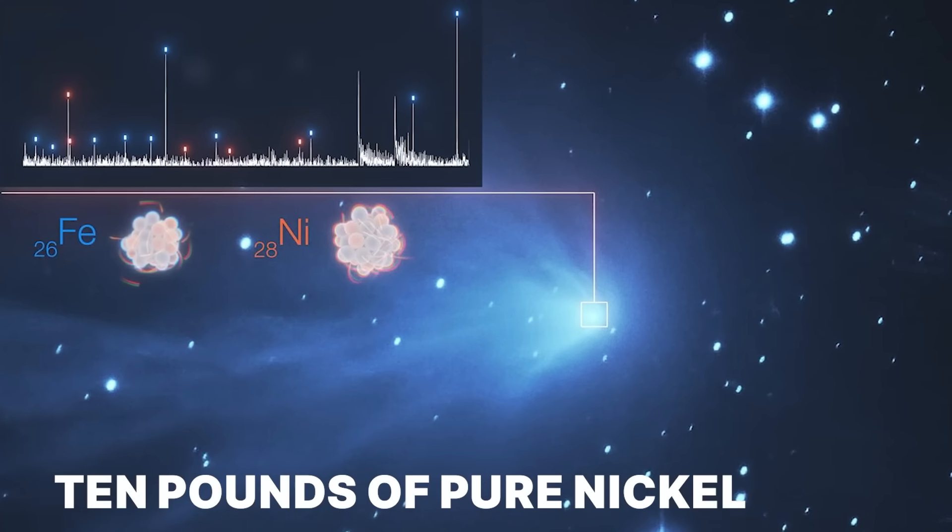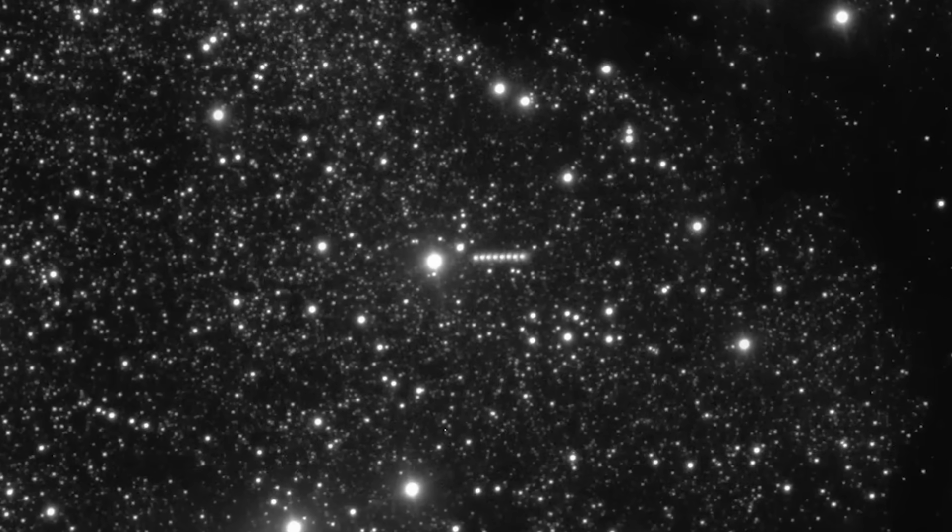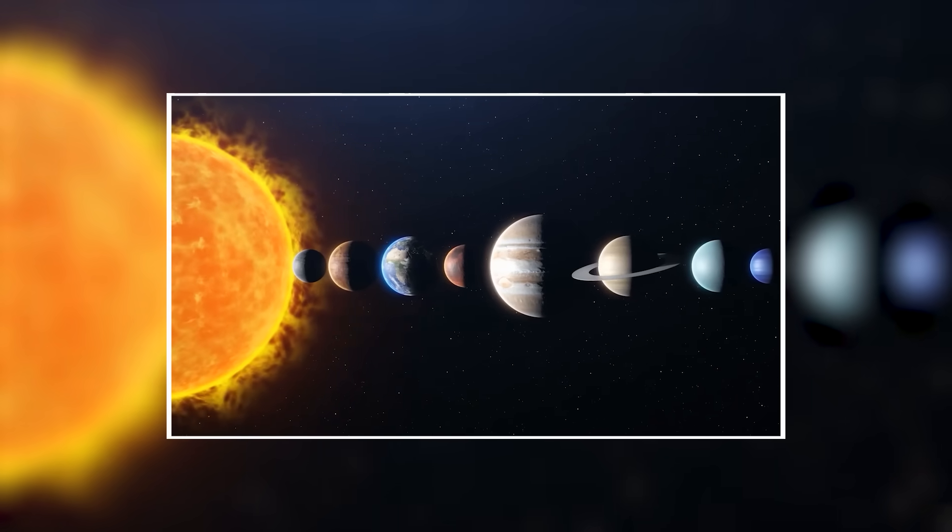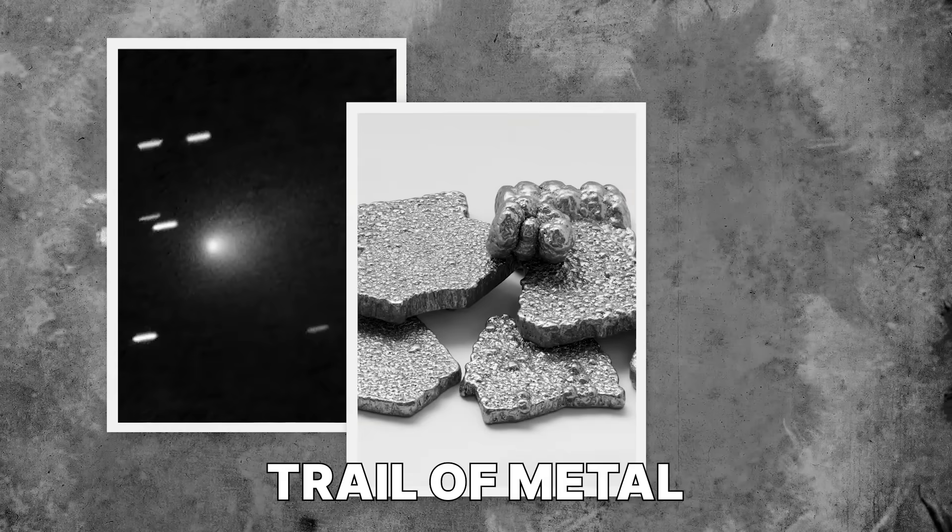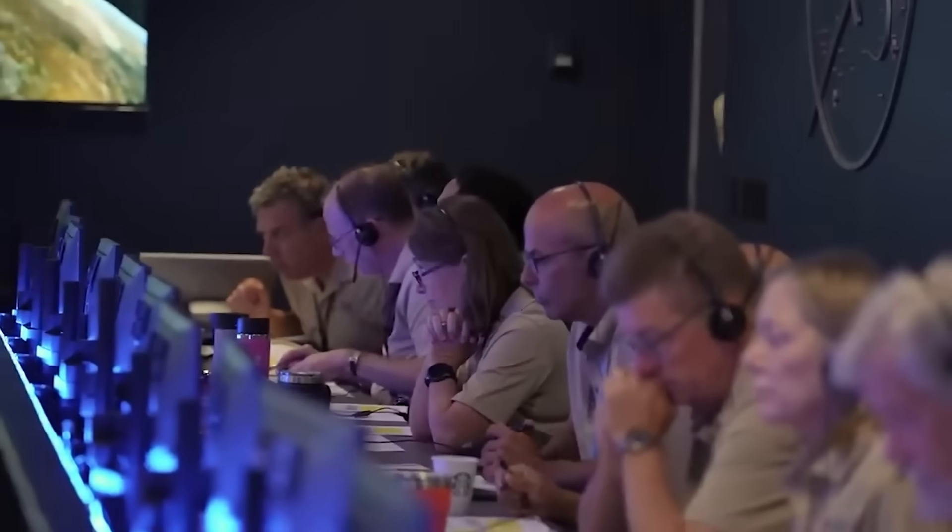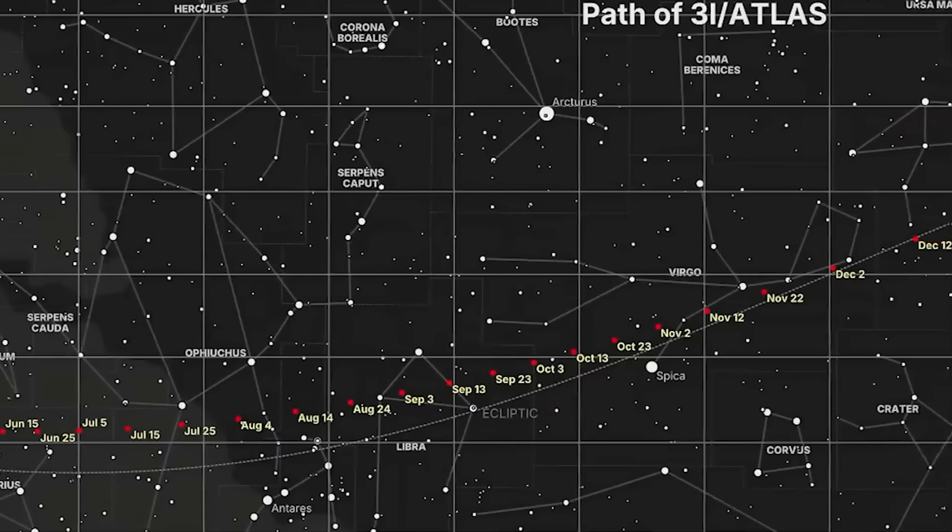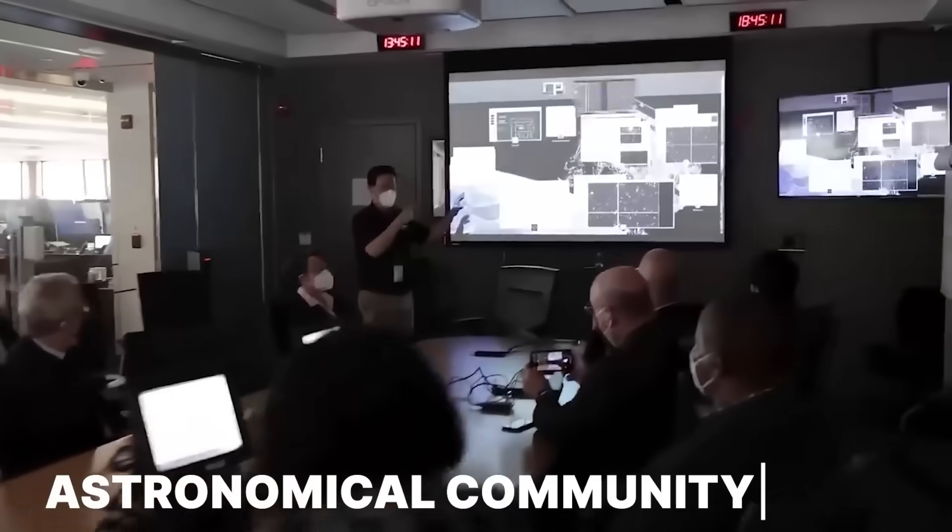It's shedding 10 pounds of pure nickel every single second. As the interstellar object 3i Atlas barrels through our solar system, it's leaving behind a trail of metal that, according to our best science, simply should not exist in that form. This discovery has sent shockwaves through the astronomical community.